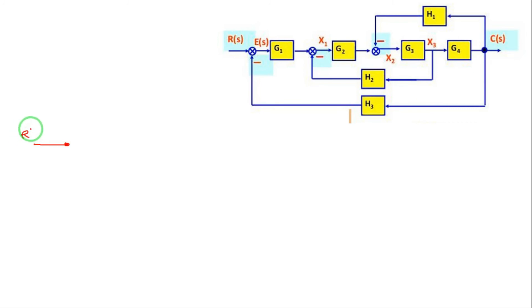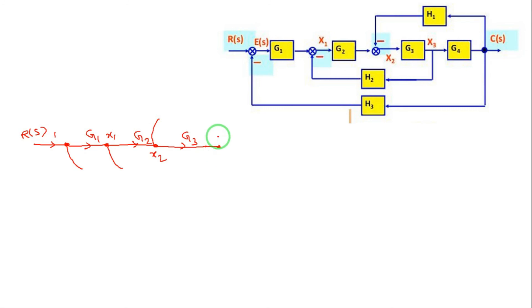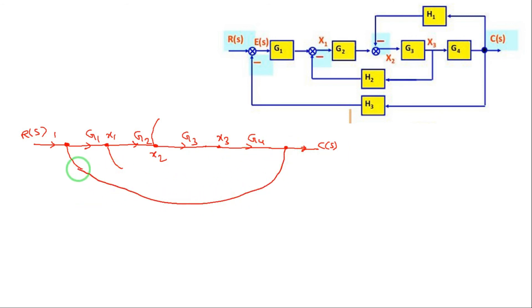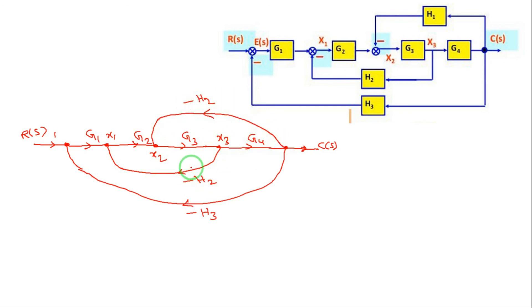Now moving to the detailed example: the input R(s) is connected to the summing point with gain value 1. According to the summing point that is G1, the summing point connects to the signal. After that another summing point uses G2, then G3 — this is x1, this is x2, after G3 comes x3, after that G4 gives the output C(s). The feedback loops are: from the output, minus H3; next at x3, minus H2; and from the output to x2, it is minus H1. This is how the signal flow graph is drawn from the block diagram, and from the signal flow graph we will use Mason's gain formula to find the transfer function.